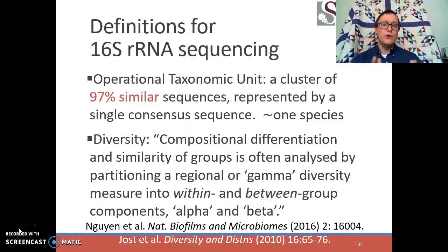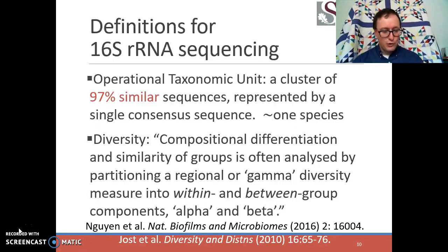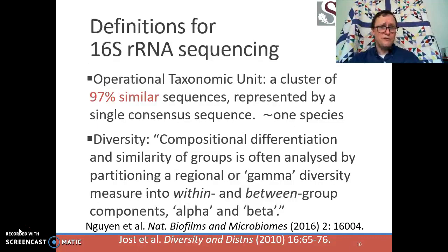By convention, we find some sequence that has a whole cloud of other sequences that are at least 97% similar to it surrounding it. By convention, we'll call that OTU essentially one species. Of course, you're going to have some species that are more genetically diverse than that, and some that are much narrower in their diversity. So this 97% rule is largely just a rule of thumb that we so frequently see applied.